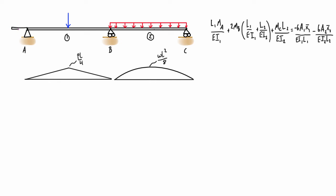However, they might not always be zero. For example, with an overhanging beam with a point load at the end, MA would no longer be zero — but it would be easy to find by taking a virtual cut and multiplying the point load by the distance. So the edge moments like MA and MC are typically known and easy to find using statics before proceeding.